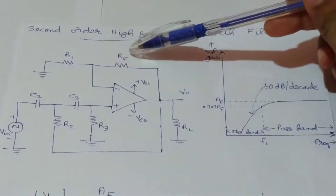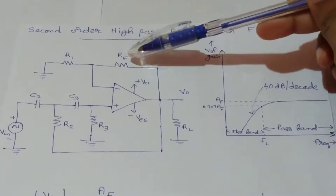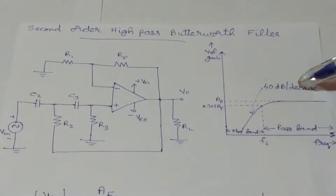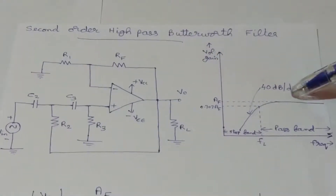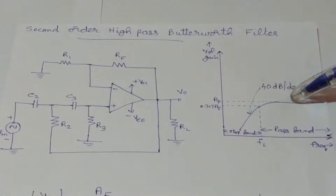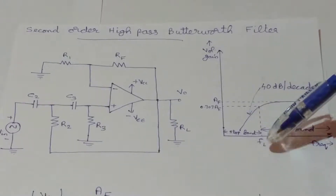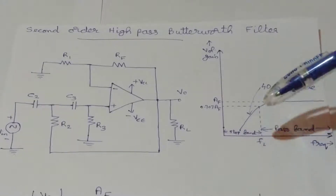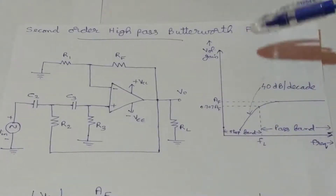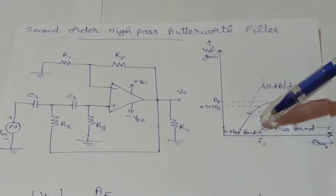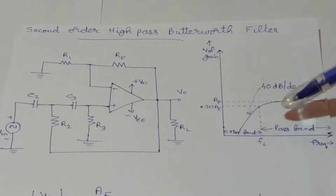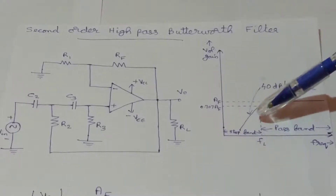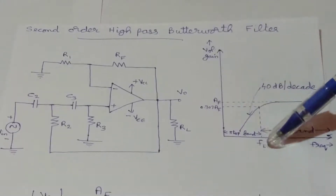R1 and Rf resistors are used to control the gain of this circuit. This is the frequency response of the second-order high-pass Butterworth filter. FL represents the lower cutoff frequency. This filter passes frequencies above FL and blocks frequencies below FL.